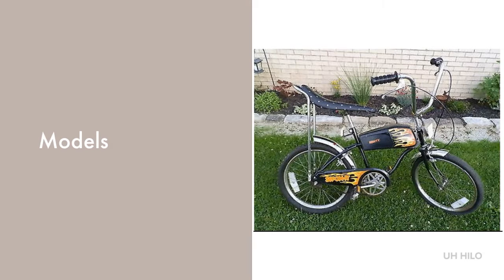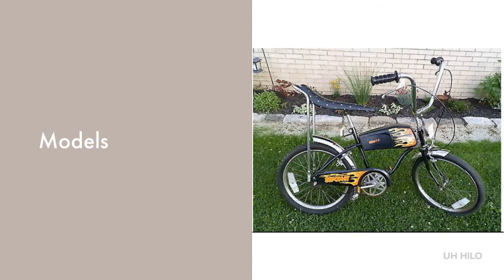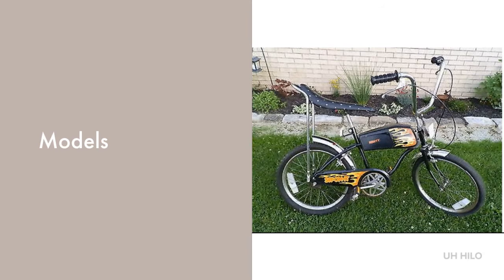Models also hide details that may be present in the real-world version. There certainly wasn't a throttle on that cute little Huffy bike. So we may need to develop a model that captures the essence of the real thing while removing incidental details. You may even recall that a Turing machine is a model of a computer, even though it removes a lot of details.